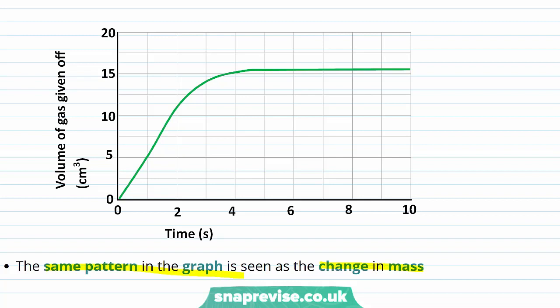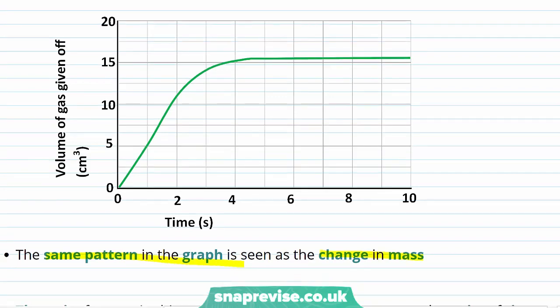In exactly the same way as for the graph of change in mass, we can see that the amount of gas given off rises in the first part of the reaction as the reaction gets started, before flattening out when all the reactants have been used up and the reaction is finished.